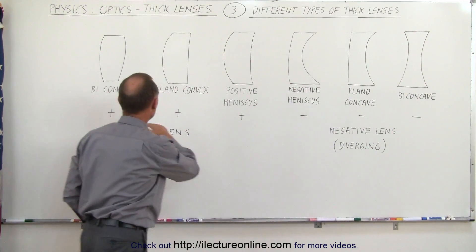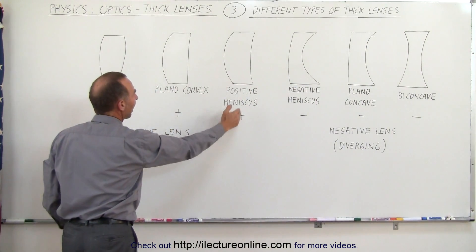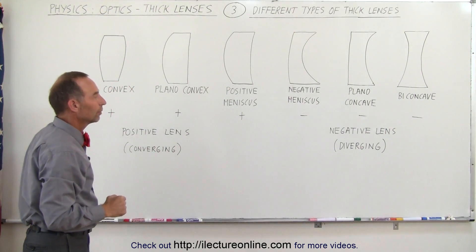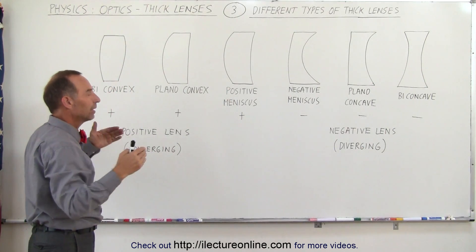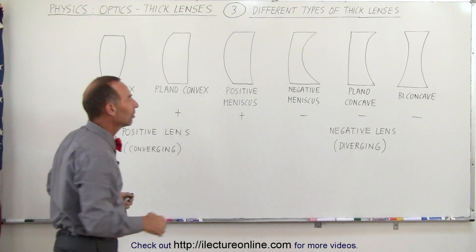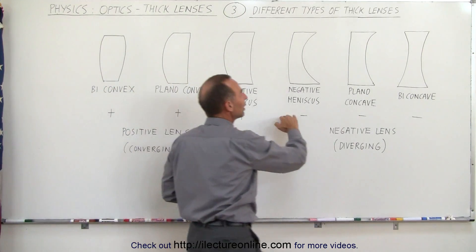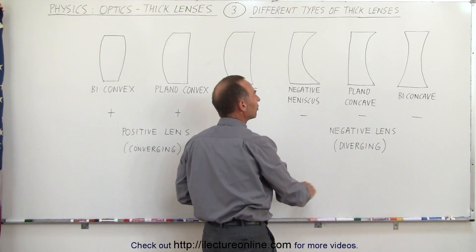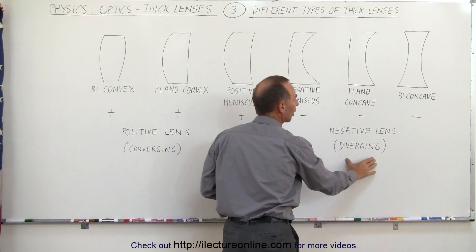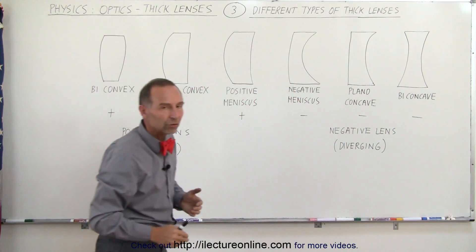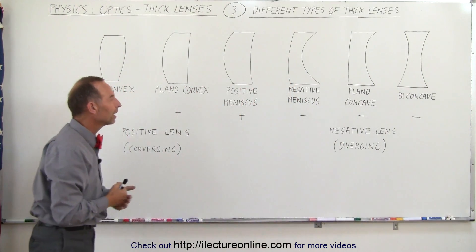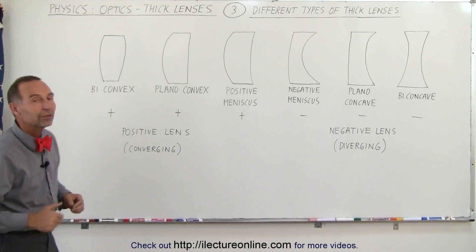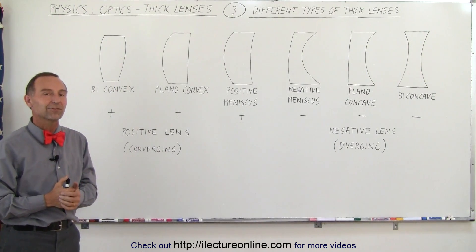Notice the first three lenses have a positive focal length, therefore they are converging lenses. The last three lenses have negative focal lengths — they're called negative lenses and cause the rays to diverge. So those are the different kinds of lenses we're going to be running into, and it's good to know the name and convention of these lenses.